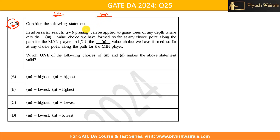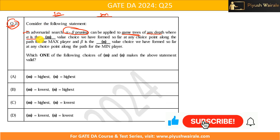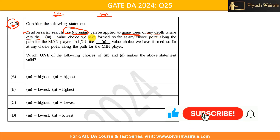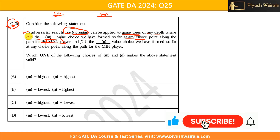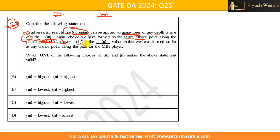Consider the following statement: in an adversarial search, alpha-beta pruning can be applied to game trees of any depth, where alpha is the value choice formed so far at any choice point along the path of the max player, and beta is the value choice formed so far at any choice point along the path of the min player. Which one of the following choices of m and n makes the above statement valid?